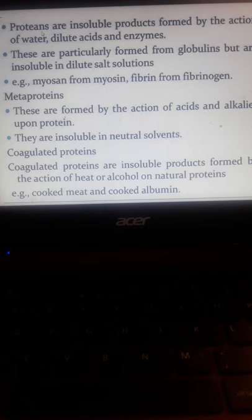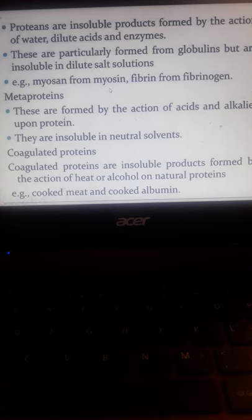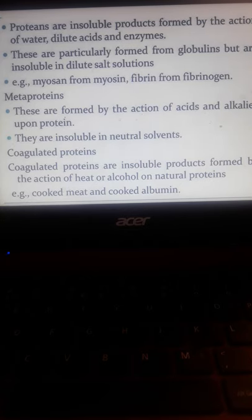Proteans are water insoluble products formed by the action of water, dilute acids, and enzymes. In our experiment with metaproteins, metaproteins are derived proteins coming from lean meat, beef meat, or pork meat and they are coagulated by heat process and with the actions of alkalis and acids. We have myosan from myosin, fibrin from fibrinogen. Myosin are muscle fibers that play an important role in the muscular contractions. Fibrin and fibrinogen for the blood clotting actions.